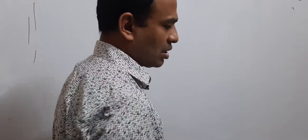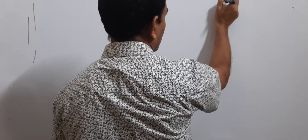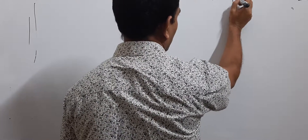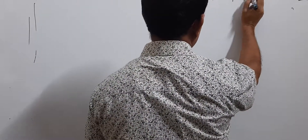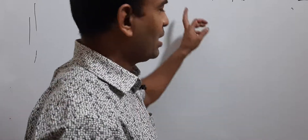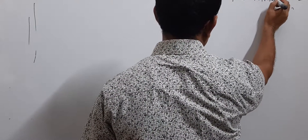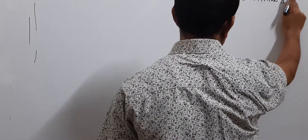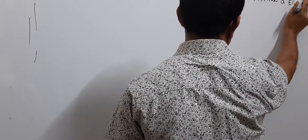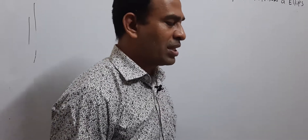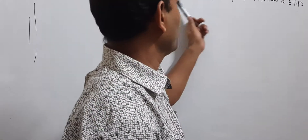Prove that |z + 2i| + |z − 2i| = 6 represents an ellipse equation. Prove that |z + 2i| + |z − 2i| = 6 represents the equation of an ellipse. I will write up the standard ellipse equation to confirm this is correct.